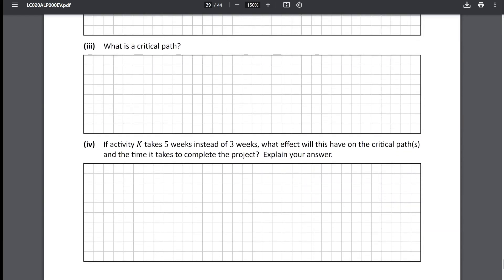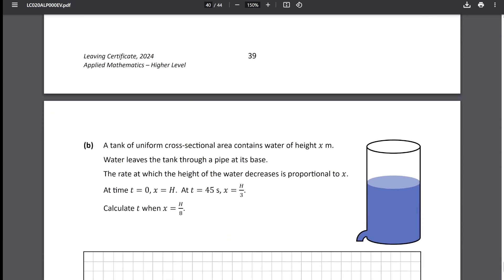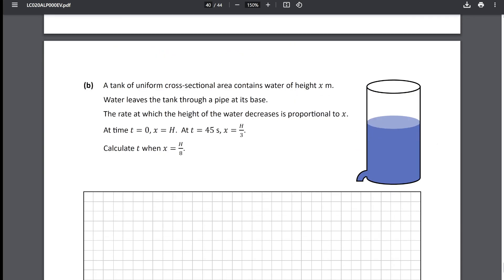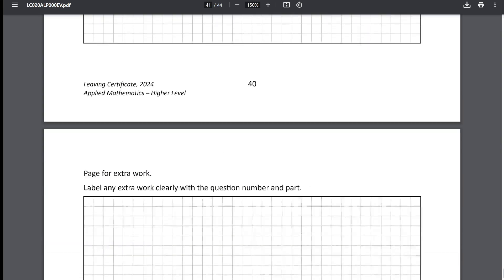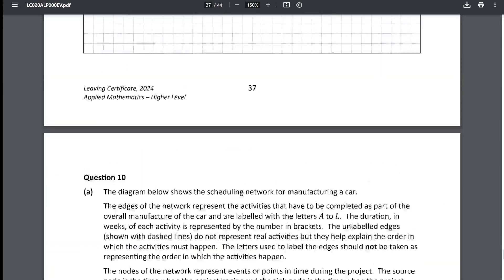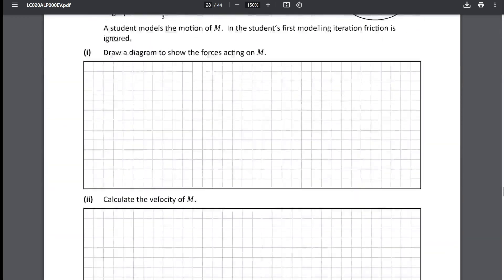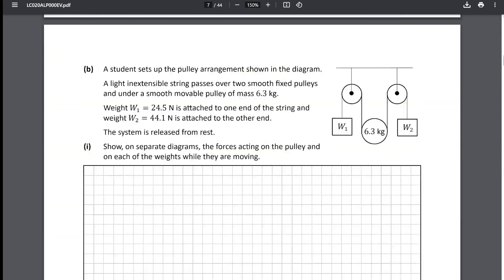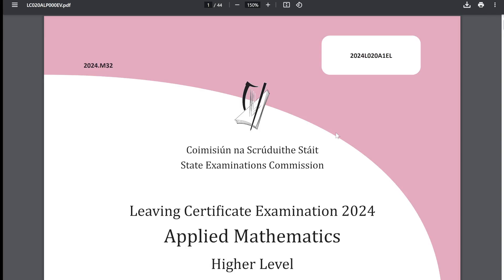Activity networks aren't my favorite but they're manageable and then they had to throw another differential equation in here. It's just utterly ridiculous how many differential equations were in this exam today. Honestly the difficulty of this paper, it was just an utterly stupid paper.